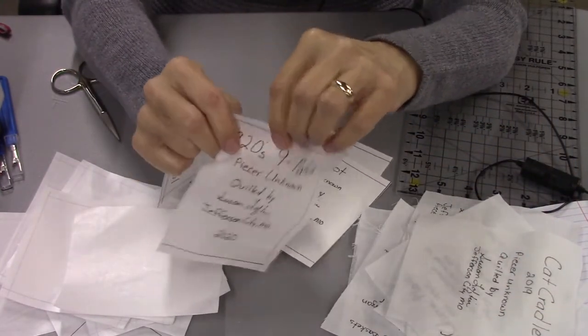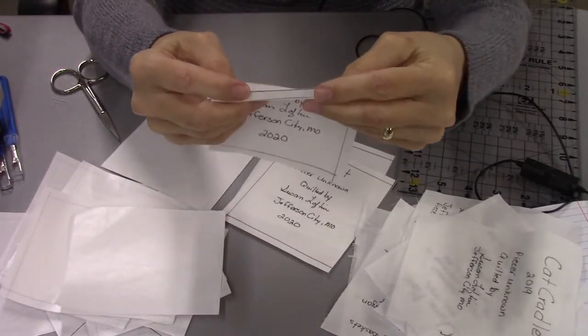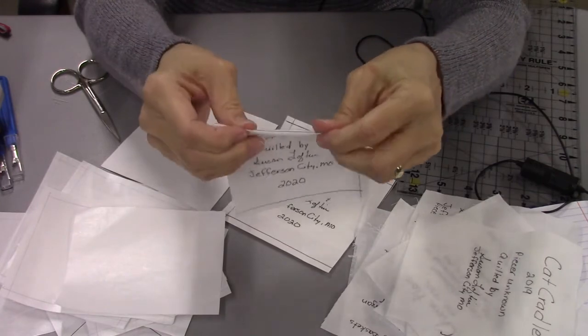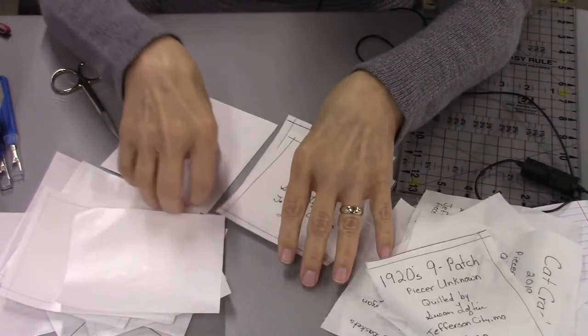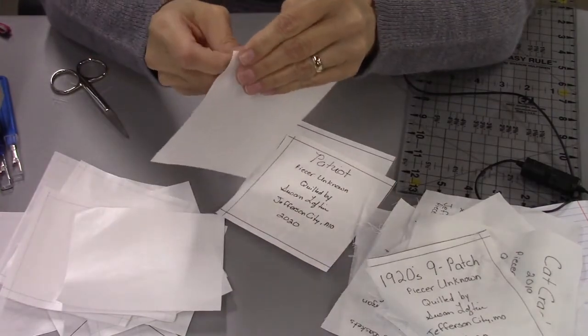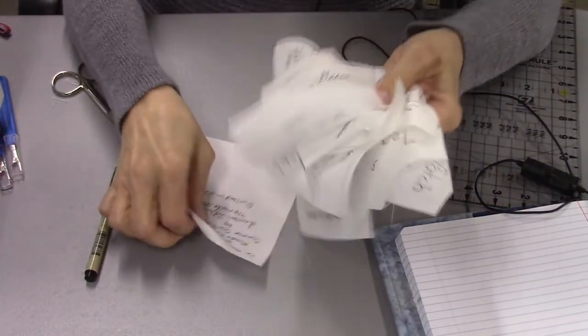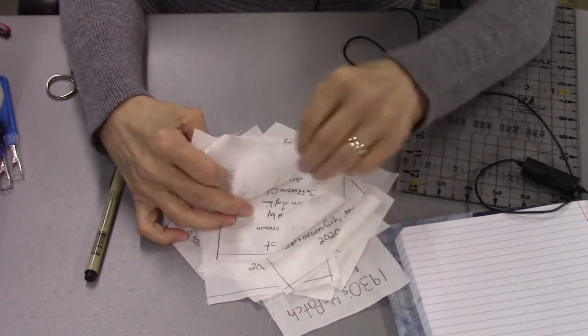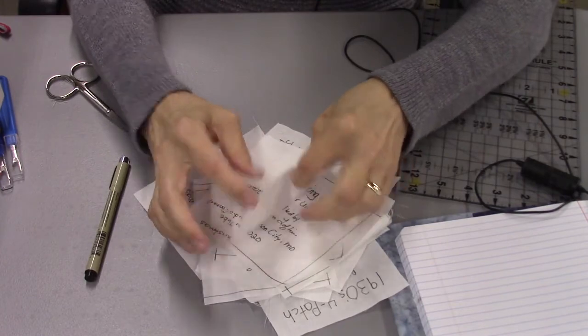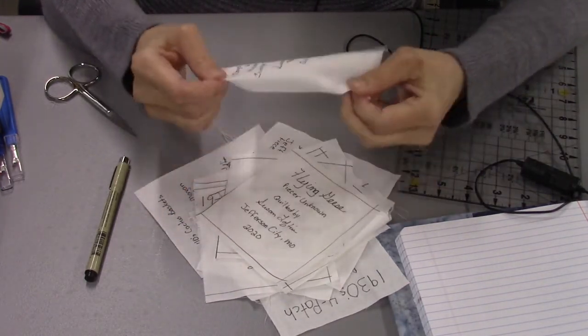Then I'll be ready to press under the edges, the raw edges, and trim off those threads, and they'll be ready to put on my quilt. So this is a quick way to make labels and it's not very expensive. A roll of freezer paper doesn't cost very much and lasts a long time. I've had this roll of freezer paper for a couple of years and I still have quite a bit on the roll.